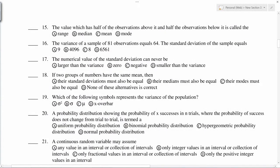The value which has half observations above and half below is median. Variance is 64, then standard deviation is the square root of the variance.